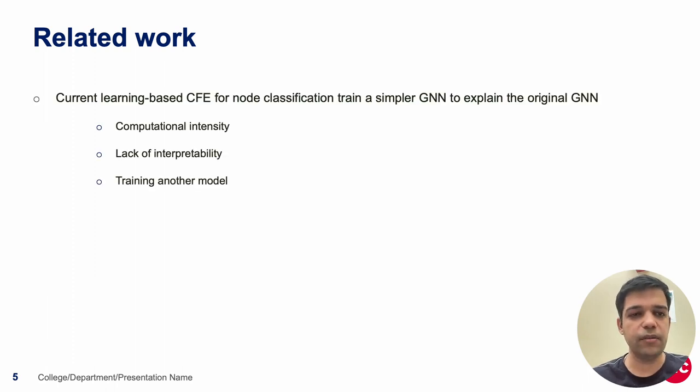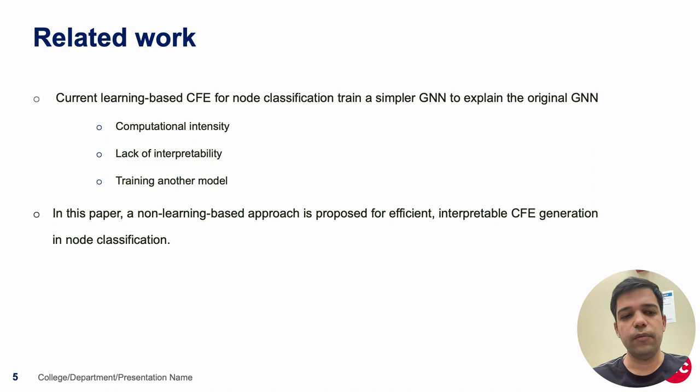The existing works for counterfactual explanations for node classification problems train a simpler GNN to explain the original GNN. This is computationally intensive, lacks interpretability, and requires training of another model. In this work therefore we present a non-learning based approach which is efficient and interpretable.